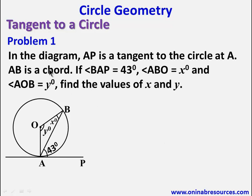Problem 1. In the diagram, AP is a tangent to the circle at A, and AB is a chord. If angle BAP is 43 degrees, angle ABO is X degrees, and angle AOB is Y degrees, find the values of X and Y.